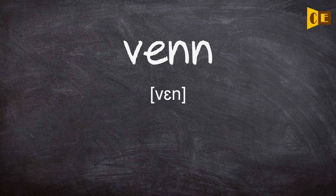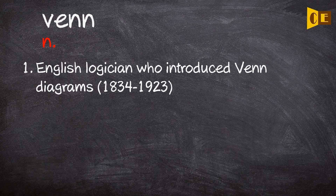Venn. Noun 1. English logician who introduced Venn diagrams, 1834 to 1923.